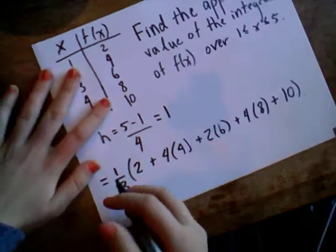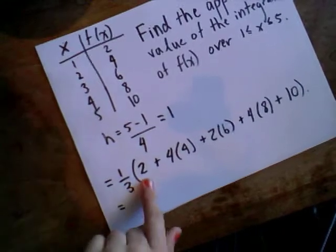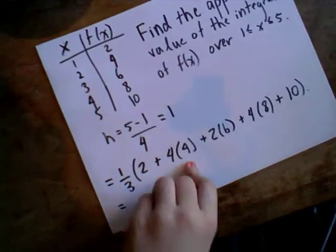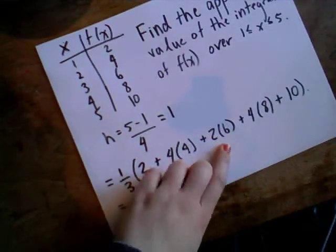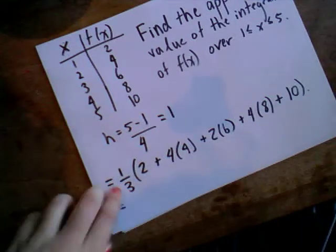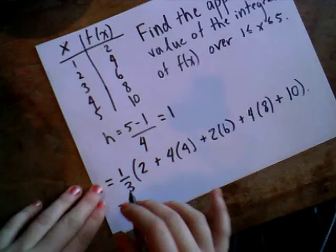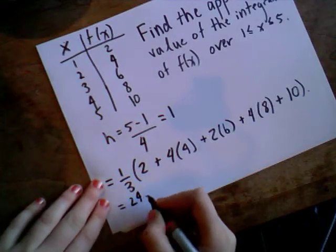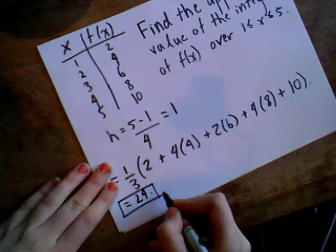And then we just work out everything that's in the brackets here. 2 plus 16 is 18, plus 12 is 30, plus 32 is 62, plus 10 is 72. Divided by 3 is 24. And that's your final answer.